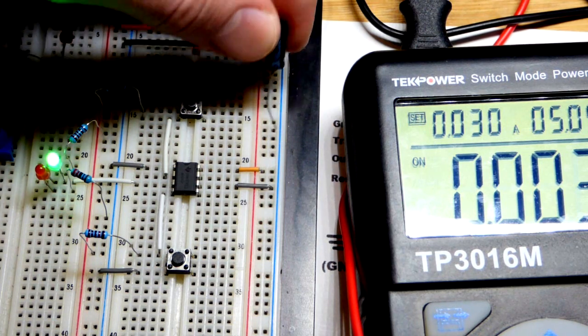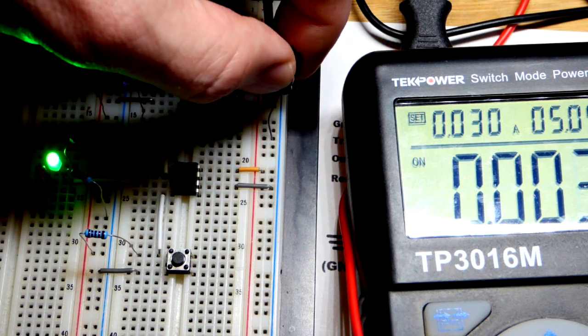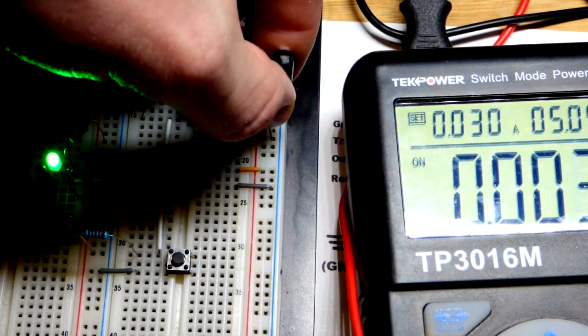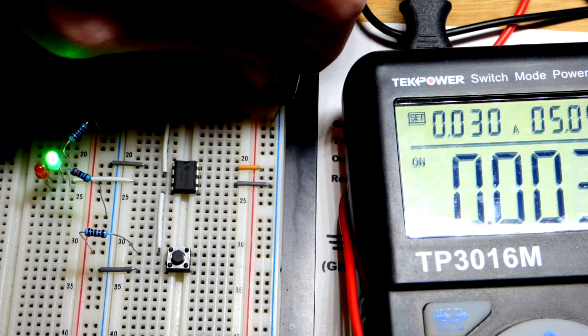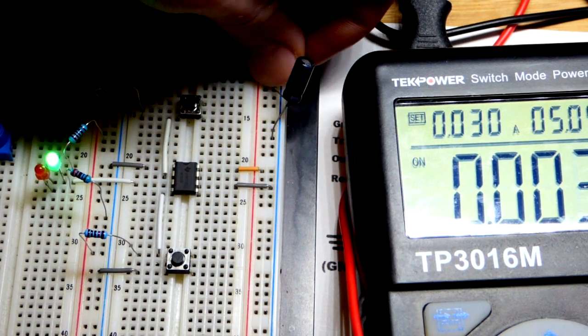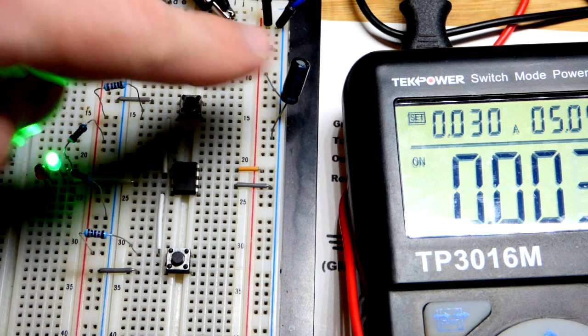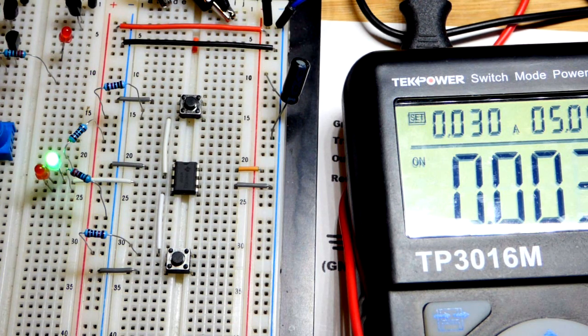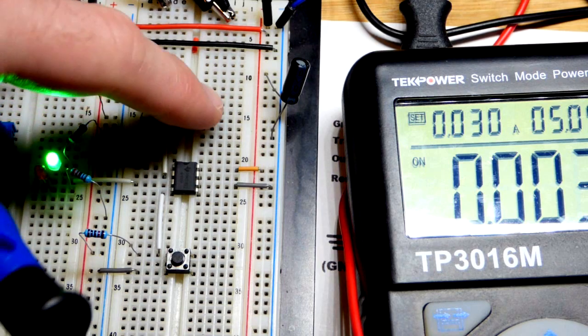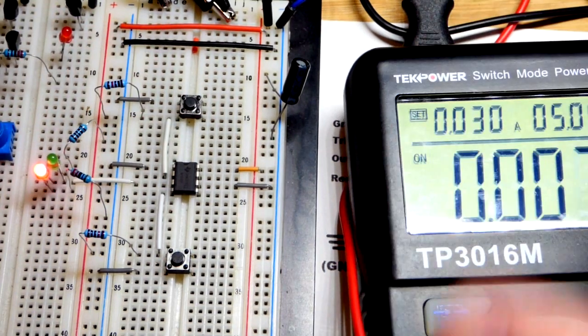And so this is a 10 microfarad capacitor. Exact value doesn't matter, but you just need enough for whatever your situation is to prevent anything from going haywire, from getting a false signal and thus changing the output. So again, now we are stable.